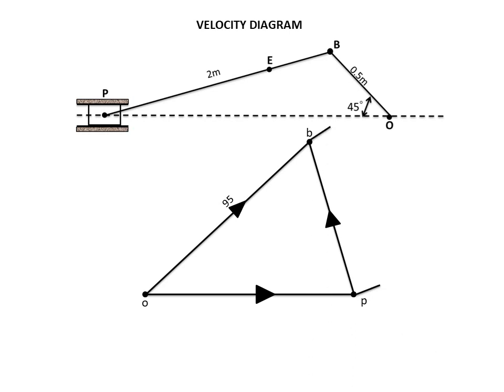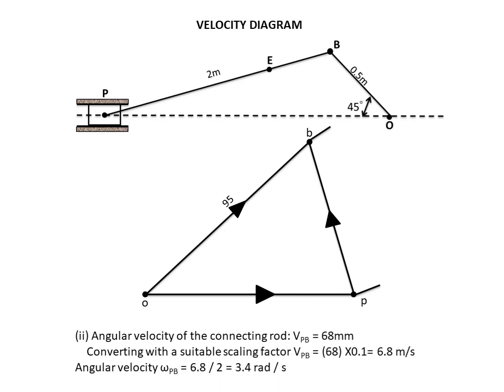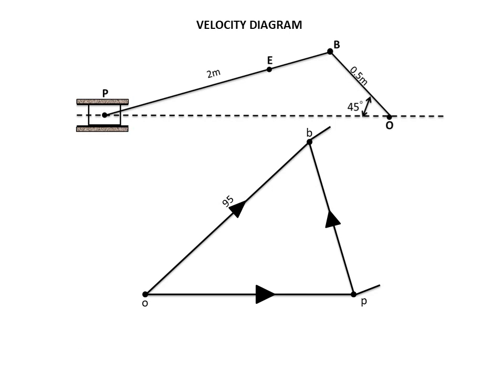The second question: what is the angular velocity of the connecting rod? If in doubt about which line represents the connecting rod, look at the configuration diagram — the connecting rod starts at B and ends at P (the gudgeon pin). Find the same points B and P in the velocity diagram and measure the length of that vector. The length is 68 mm, so the linear velocity is 6.8 m/s. Converting to angular velocity: divide linear velocity by the radius of the connecting rod — 6.8 ÷ 2 = 3.4 radians per second. That is the angular velocity of the connecting rod.